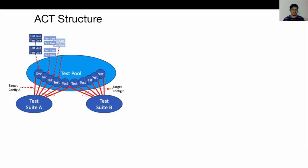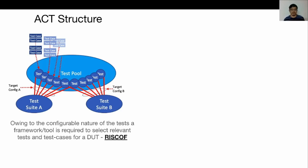If you look at the ACT directory, it is nothing more than a collection of test suites put together. Each test is an assembly test, further broken down into smaller test cases, where each test case checks certain aspects or specific alternate behaviors of a main feature. For any given implementation, we expect only to run the relevant tests and test cases as asserted by the choices made by the implementation. Therefore, the configurable nature of the tests warrants a tool which can filter tests and also filter test cases within each test. We call this tool RISC-OFF, which stands for RISC-V Compatibility Framework — an open source Python tool.